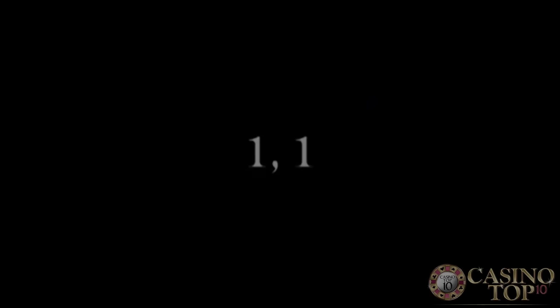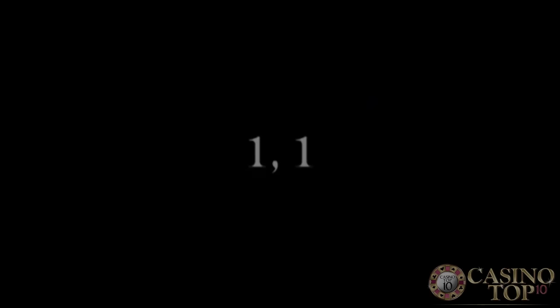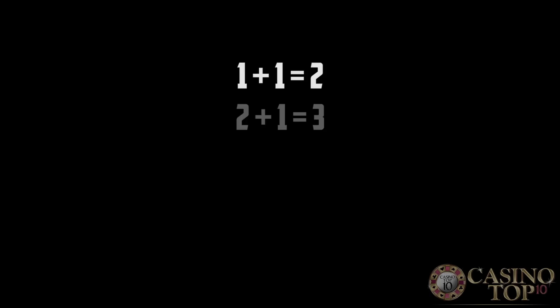In the Fibonacci sequence, every new number equals the sum of the previous two numbers. Start the sequence with two ones and it's easy to start adding numbers: one and one is two, two and one is three, three and two is five, five and three is eight, and so on.